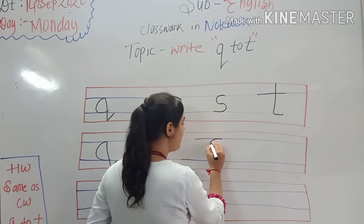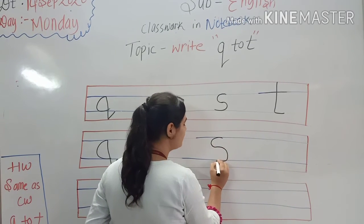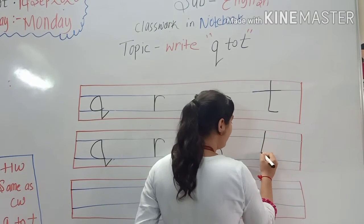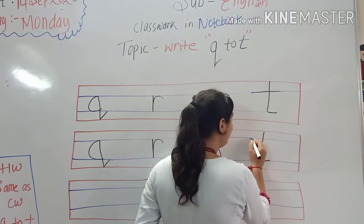Then S. Small s. Kids tell me S for? Yes. S for sun. And T for? Kids tell me T for train.